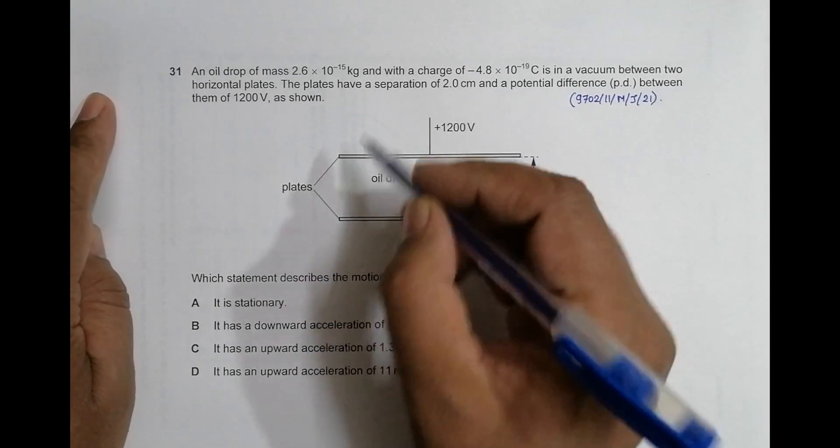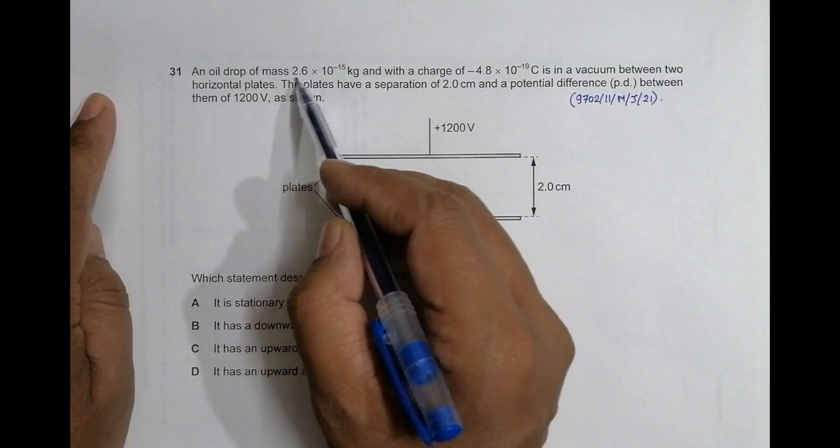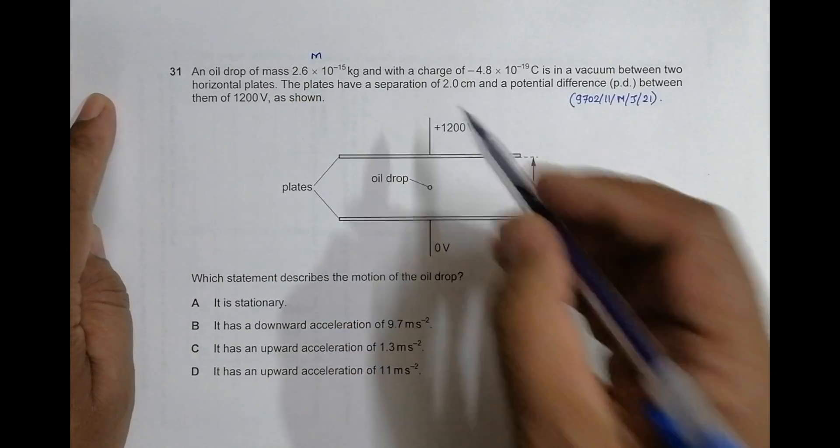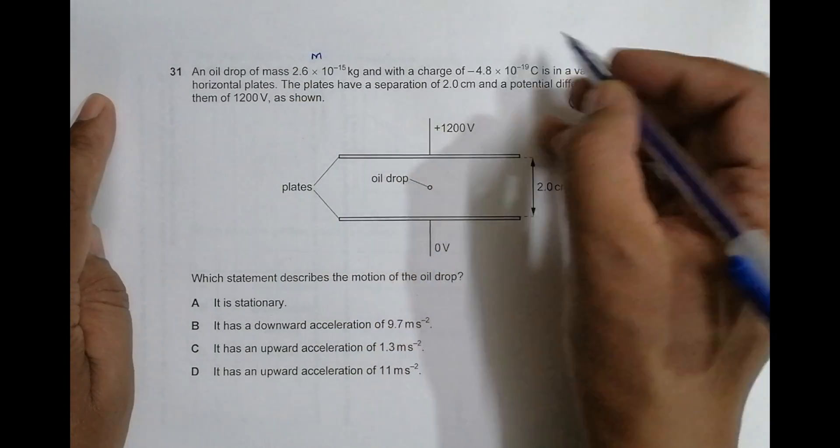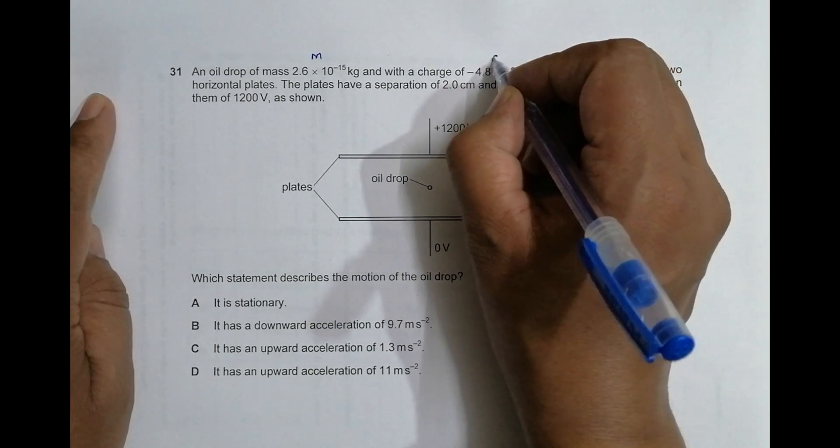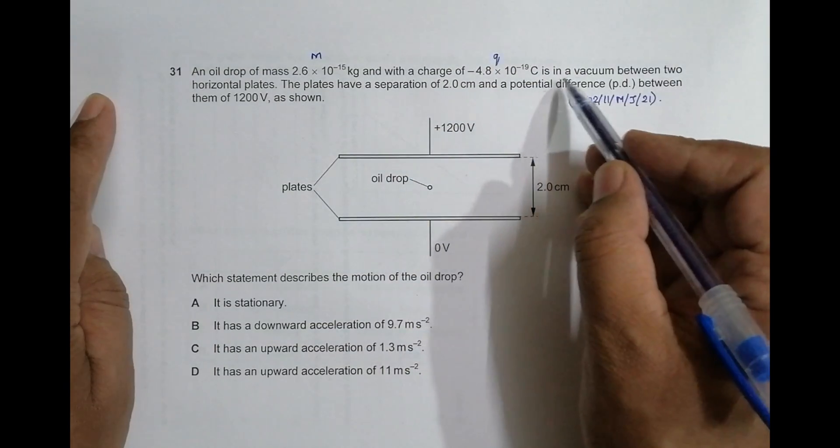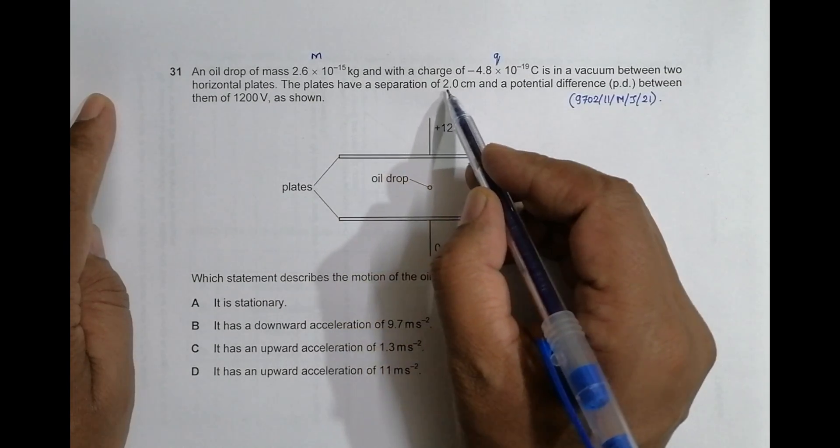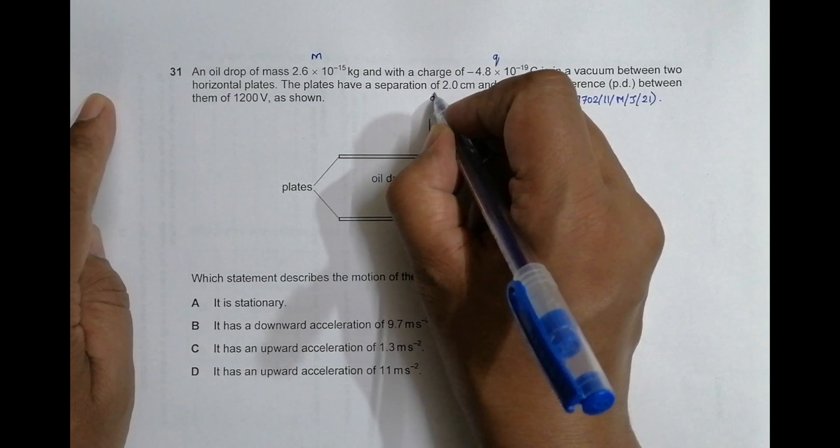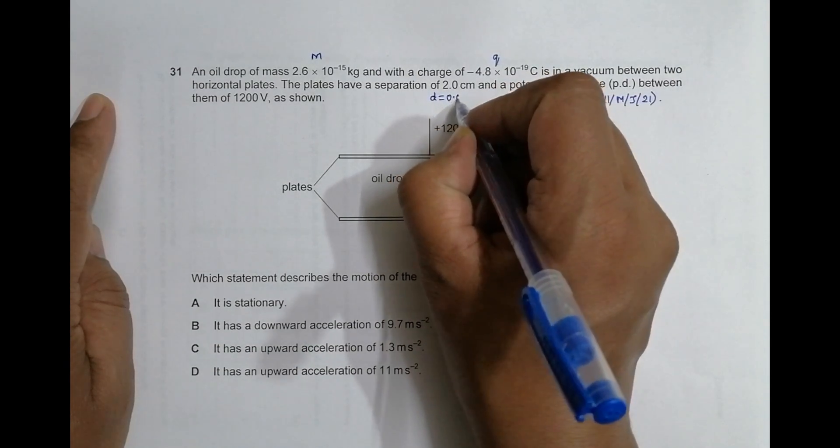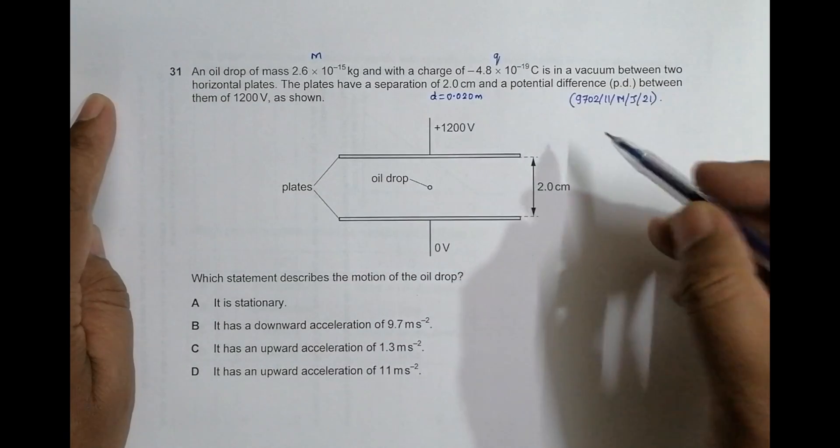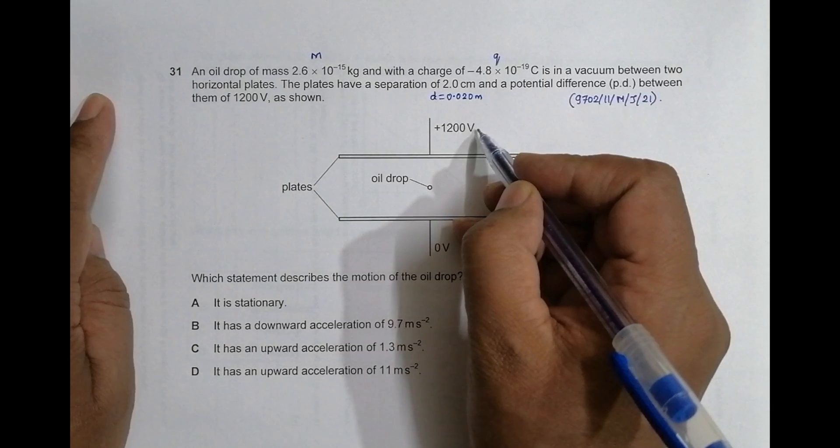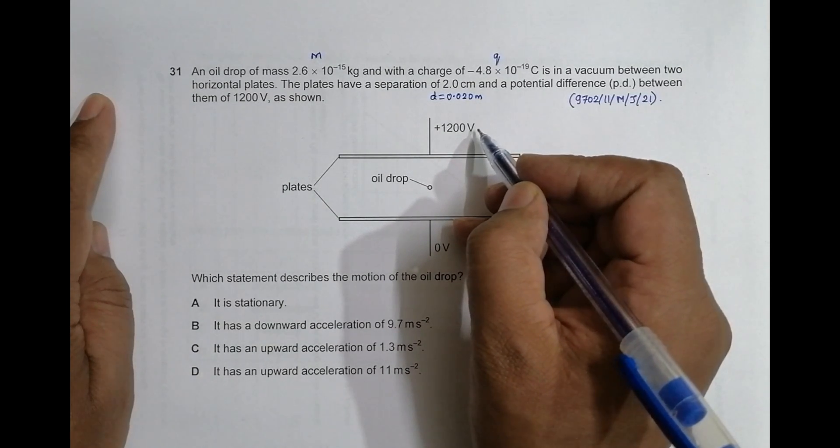This question is concerned with the chapter electric field. It says that an oil drop of mass 2.6 × 10^-15 kg and with a charge of -4.8 × 10^-19 Coulomb is in a vacuum between two horizontal plates. The plates have a separation of 2.0 cm, so D equals 0.020 meters, and the potential difference between them is 1200 volts.